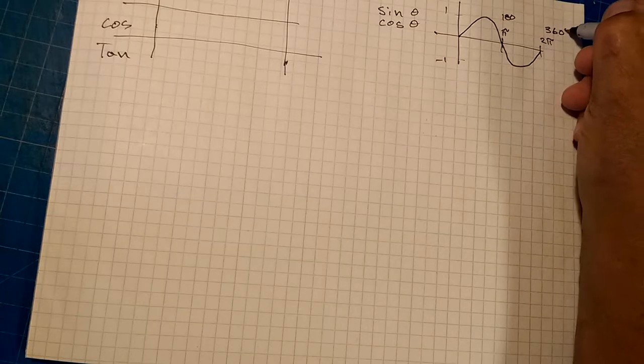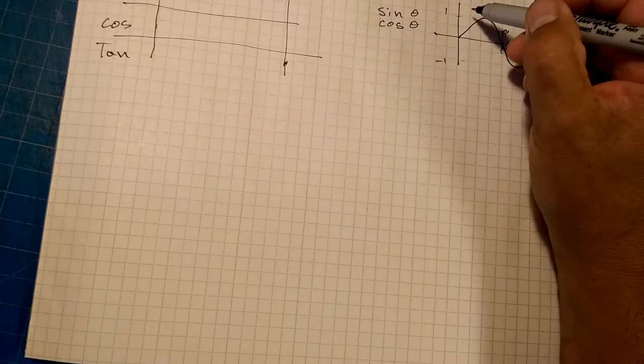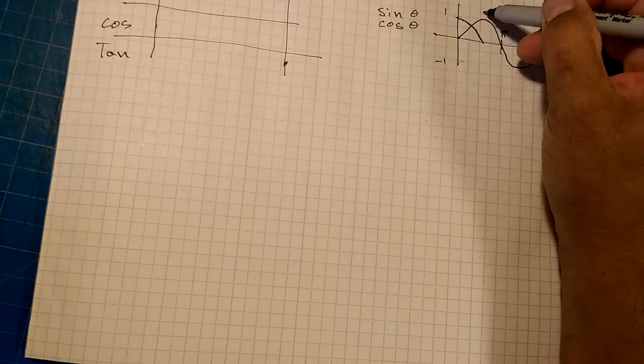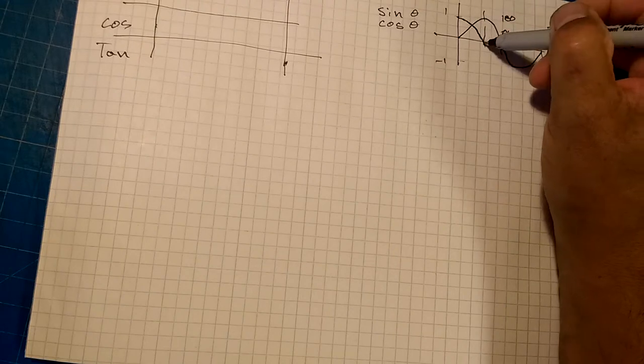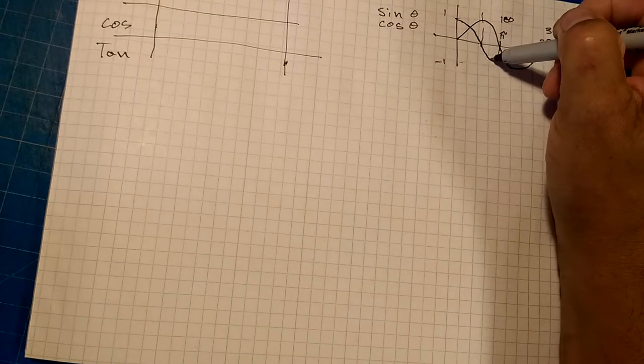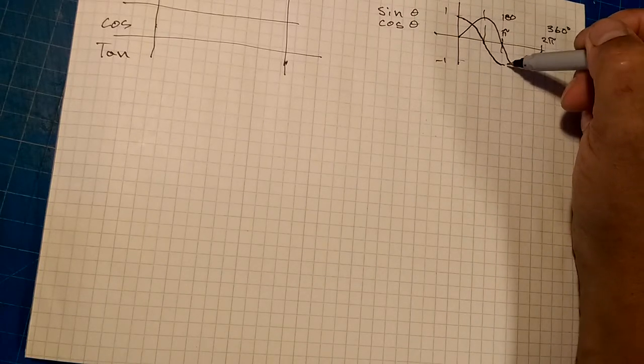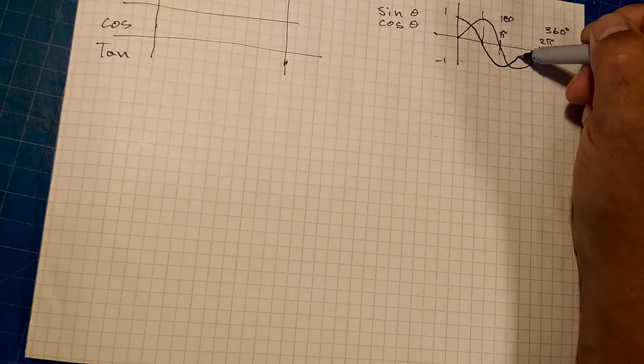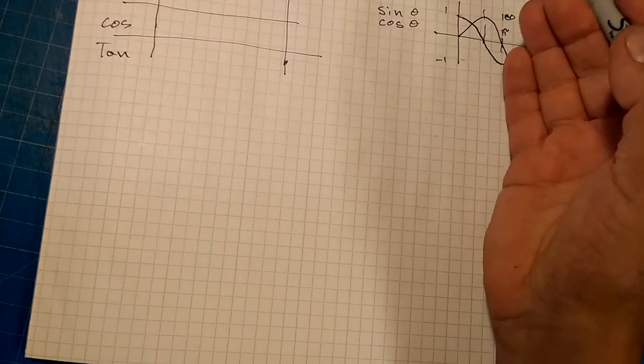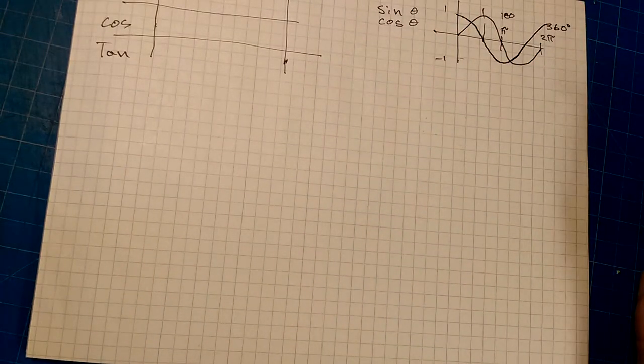And I know that the cosine function starts at 1, drops down to 0 at the same point that sine is equal to 1. And then it drops down to negative 1 at the same point that sine is equal to 0, crosses up here, and it goes like this. So, it's basically the sine curve, but shifted a quarter period to the left.